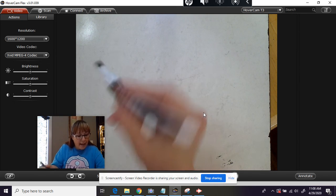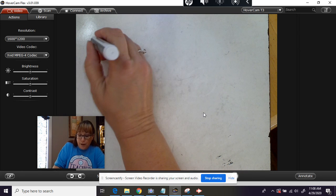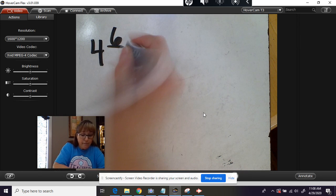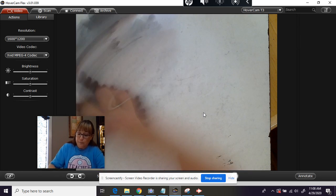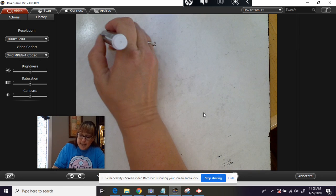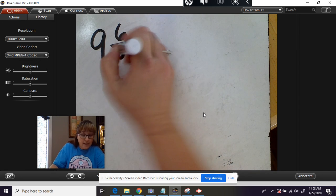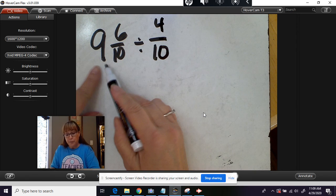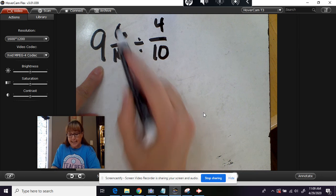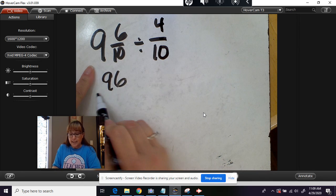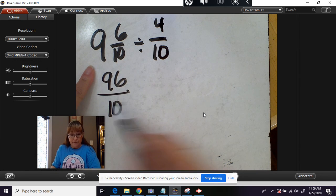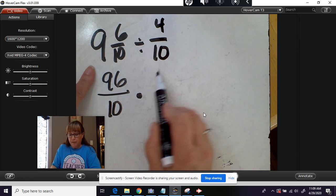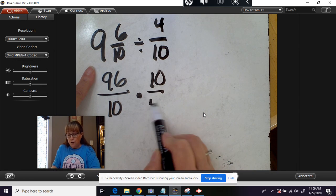All right, let's look at our second one. We have nine and six tenths divided by four tenths. All right, multiply 90 plus six, 96 over ten. Times, we're going to flip this, ten over four.